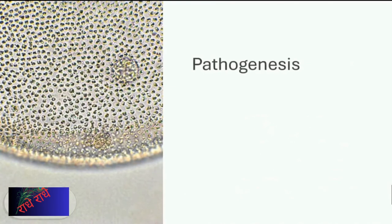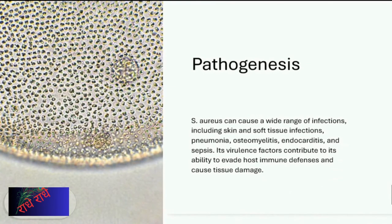S. aureus is a bacterium that can cause a variety of infections in humans. Its virulence factors, such as toxins and enzymes, enable it to evade the body's natural defense mechanisms, allowing it to cause tissue damage and serious illnesses. Infections caused by S. aureus can range from skin and soft tissue infections to severe respiratory illnesses and sepsis, as well as other serious conditions like osteomyelitis and endocarditis.